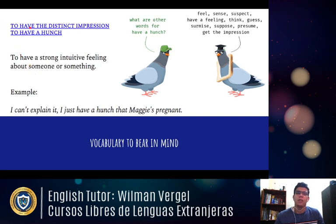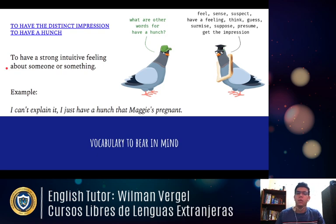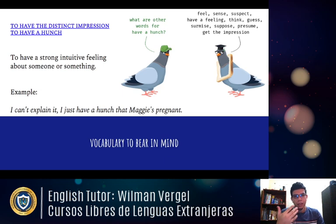The next expression is 'to have a hunch.' The pronunciation is 'hunch.' Other words for it include: feel, sense, suspect, have a feeling, think, guess, surmise, suppose, presume, and get an impression. Basically, it means to have a strong, intuitive feeling about someone or something. For example: 'I can't explain it — I just have a hunch that Maggie's printing.' Having a hunch is like having a feeling, like thinking, but it's something you can feel rather than just think.